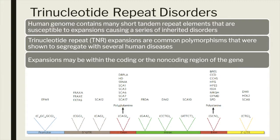For example, if it's in the non-coding region, then the number of repeats required for the expansion to become pathogenic may be different. Or the mechanism behind how each of these repeats may cause a particular disease may be different. If they're in the 5-prime non-translated region, then the mechanism might be a loss of function mechanism where the protein is not produced. Whereas if they lie in the coding region, just like all the CAG repeat disorders, then the mechanism of action is usually toxic gain of function, where the protein is causing abnormal functioning because of these expanded repeats.